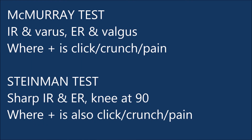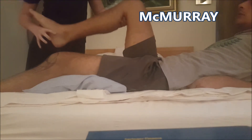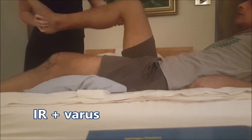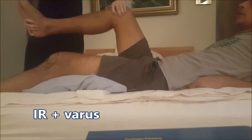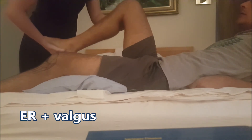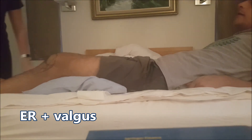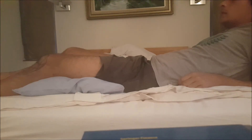The last thing we need to test for is meniscal injuries. There are two tests: the McMurray test and the Steinman test. Positive tests are where there is a click, a crunch or pain elicited. The McMurray test involves flexing at the hip, internally rotating the foot, applying a varus force at the knee and extending. Then do the same with external rotation at the foot, a valgus force at the knee and extend. We are looking for clicks, crunches and pain.